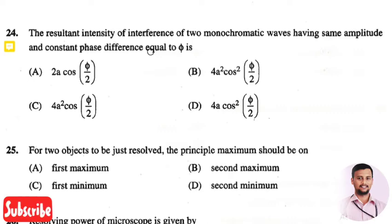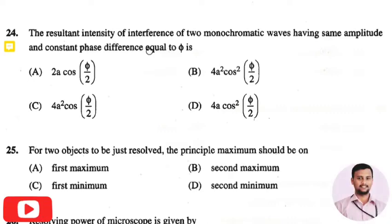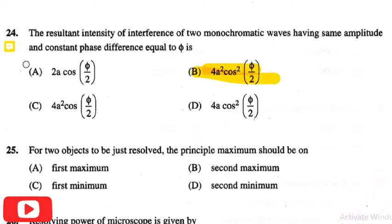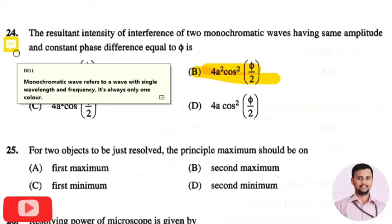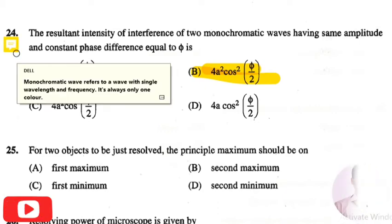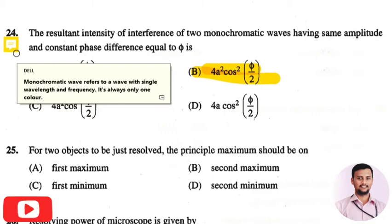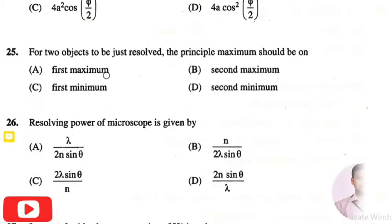The next question is: the resultant intensity of interference of two monochromatic waves having the same amplitude and a constant phase difference equal to π — the right answer is option two, that is 4a² cos²(π/2). Monochromatic waves refer to waves with a single wavelength and frequency, and they have only one color.